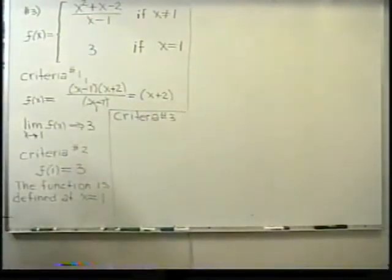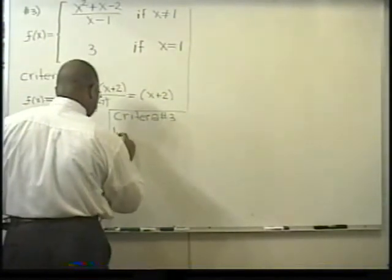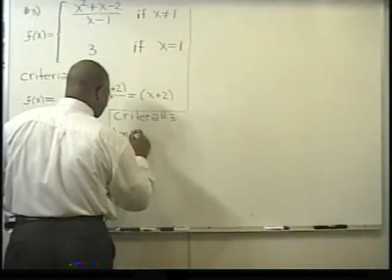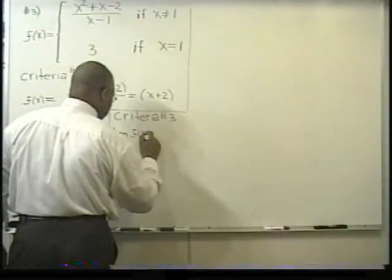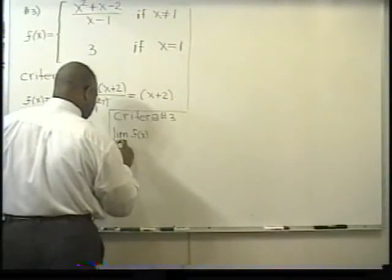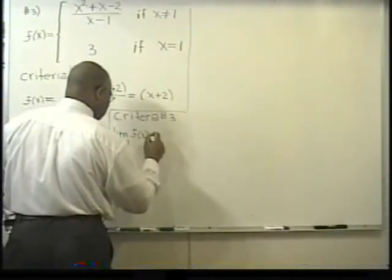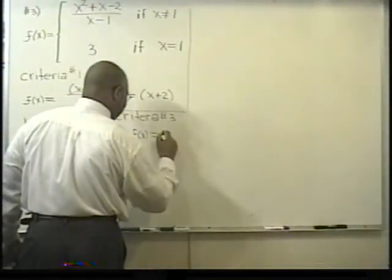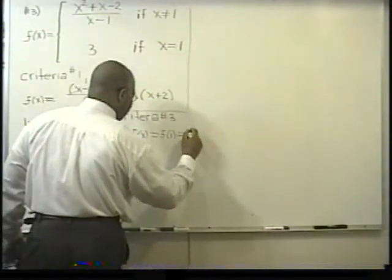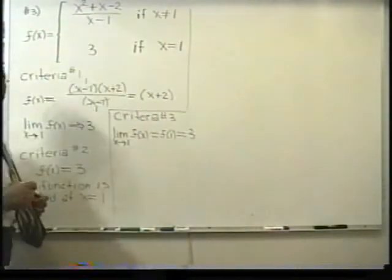We want to know, is the limit equal to the function at that value. And lo and behold, the limit of f of x, as x approaches one, it is equal to f of one, and they are both equal to three.